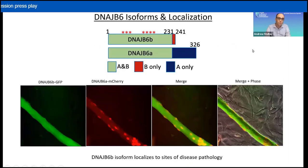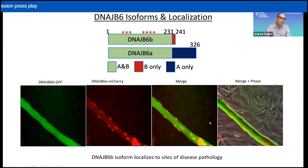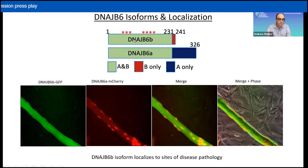DNAJB6 has two isoforms: a short B isoform and a long A isoform. In a mouse muscle fiber electroporated with both isoforms using different fluorescent tags and isolated in vitro, we can see their distinct subcellular localizations. The B isoform localizes diffusely throughout the fiber including the sarcomere, which is the site of pathology seen in patient tissue with myofibrillar abnormalities. The A isoform localizes primarily to myonuclei due to the presence of a nuclear localization sequence. Disease-causing mutations are in regions shared between both isoforms.